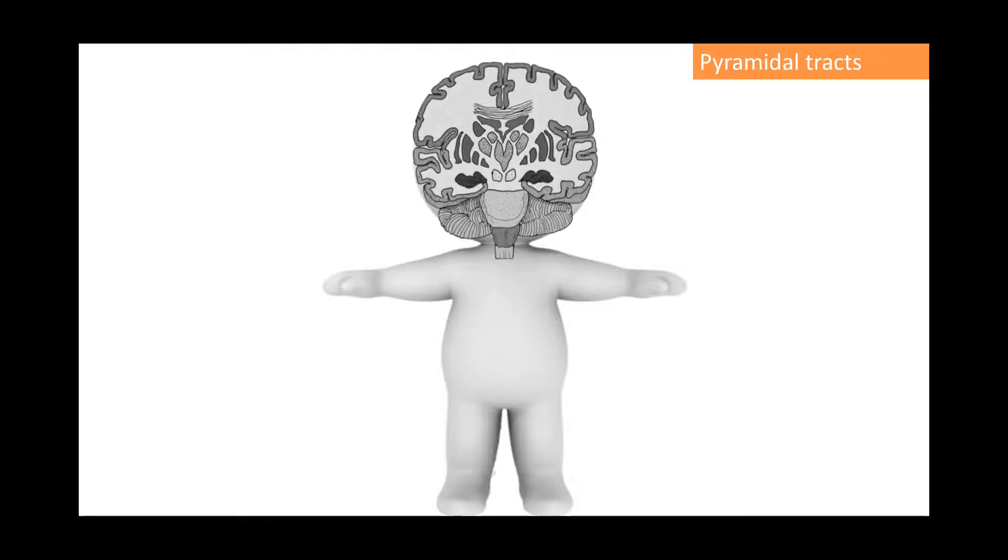To study these pyramidal tracts, we are going to call this little guy here and use our x-ray vision to look inside his body. This is inside his head. And this is his spinal cord. The pyramidal tracts will originate on the cortex and its fibers will go all the way down.